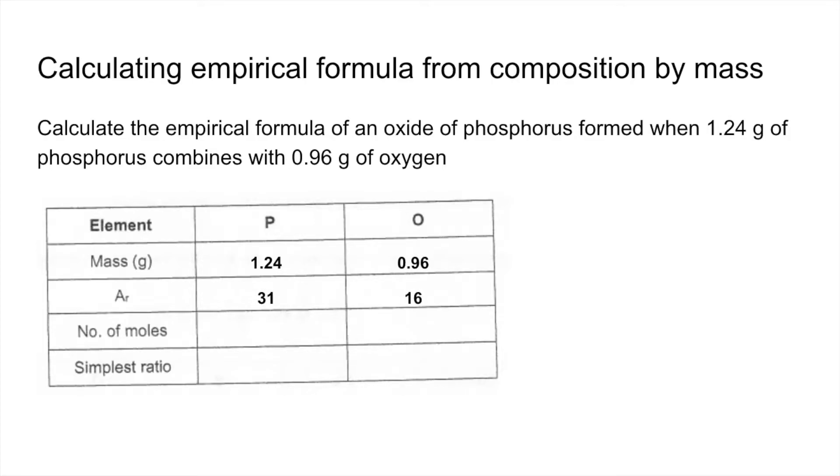We're going to divide the mass by the relative atomic mass. That's going to give us the moles. Just make sure you record those to three significant figures, rounded correctly, of course. And then we're going to divide by the smallest, so 0.04 in this case, to get the simplest ratio, which comes out to 1 to 1.5.